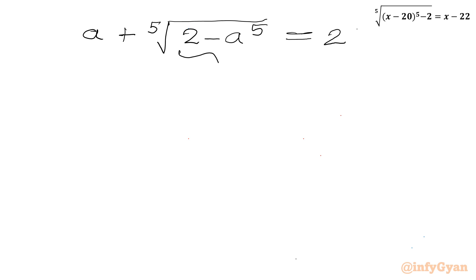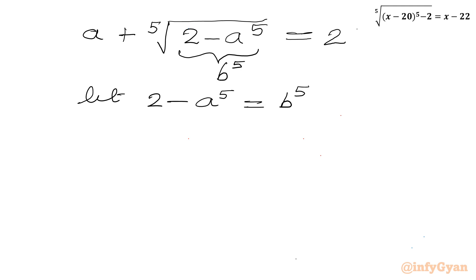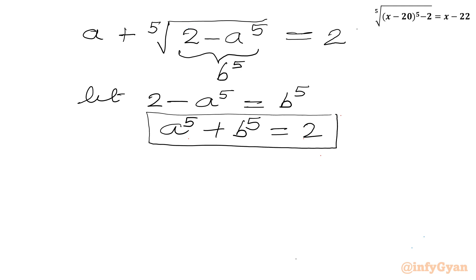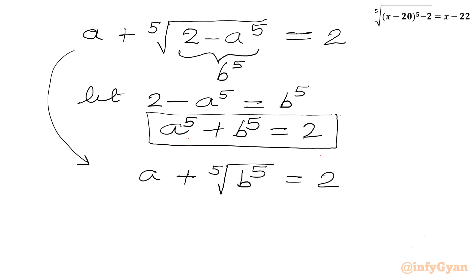Now I will use a substitution. Let 2 minus a to the power 5 equal to b to the power 5. So from here I can write a to the power 5 plus b to the power 5 equal to 2 — this is our first equation. The second equation comes from the original: a plus the 5th root of b to the power 5 equal to 2. Since the 5th root and power 5 cancel, we get a plus b equal to 2.